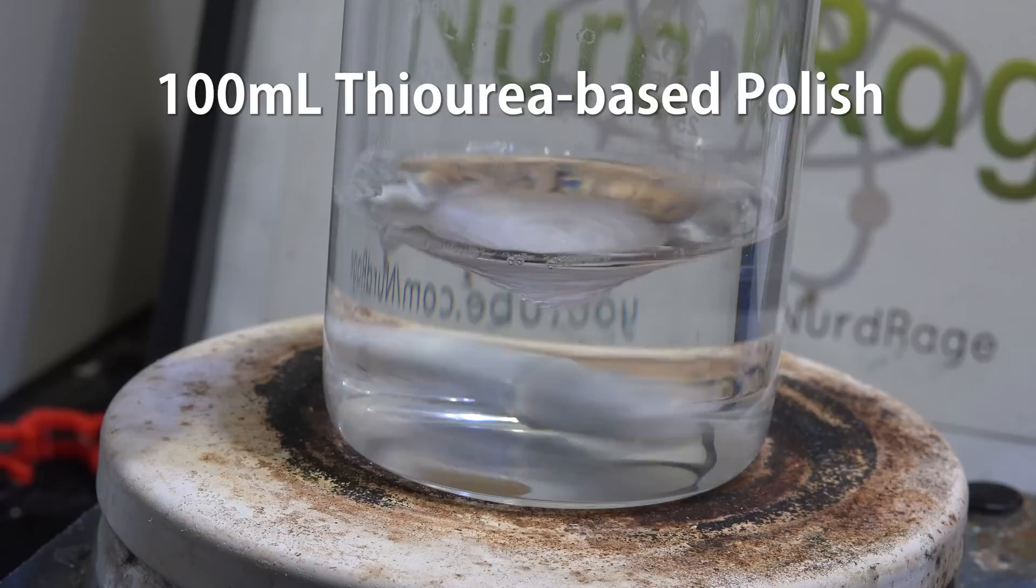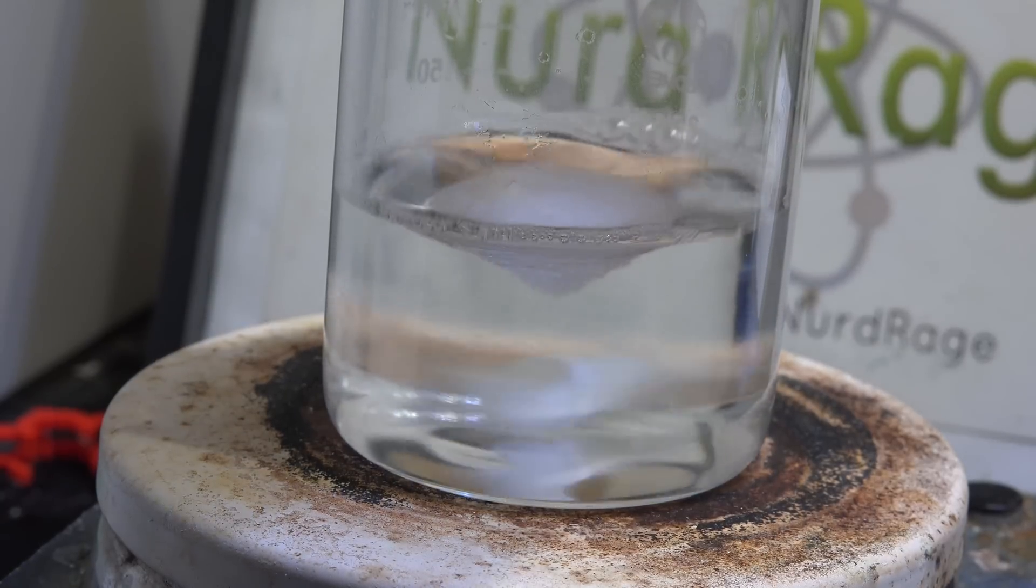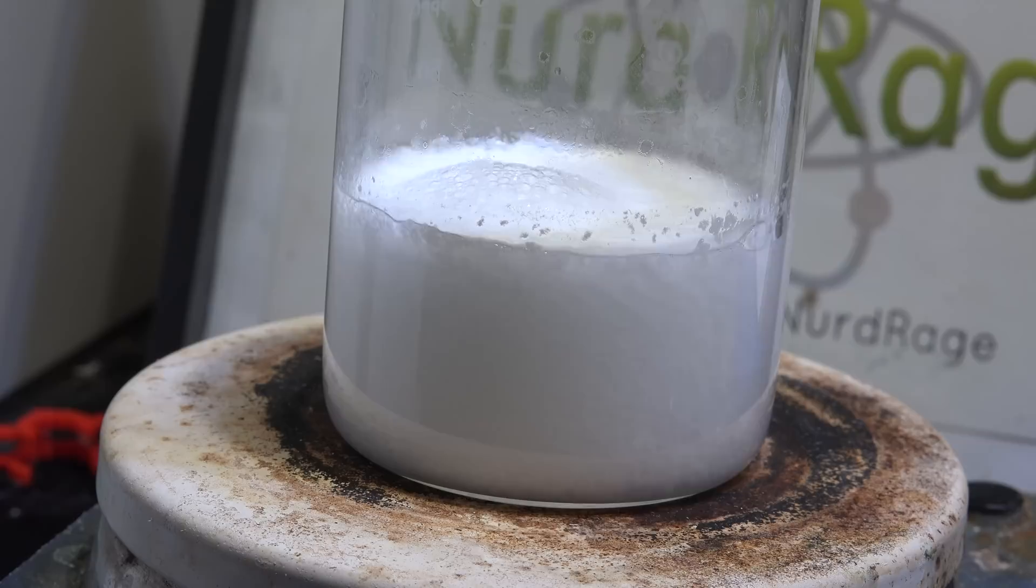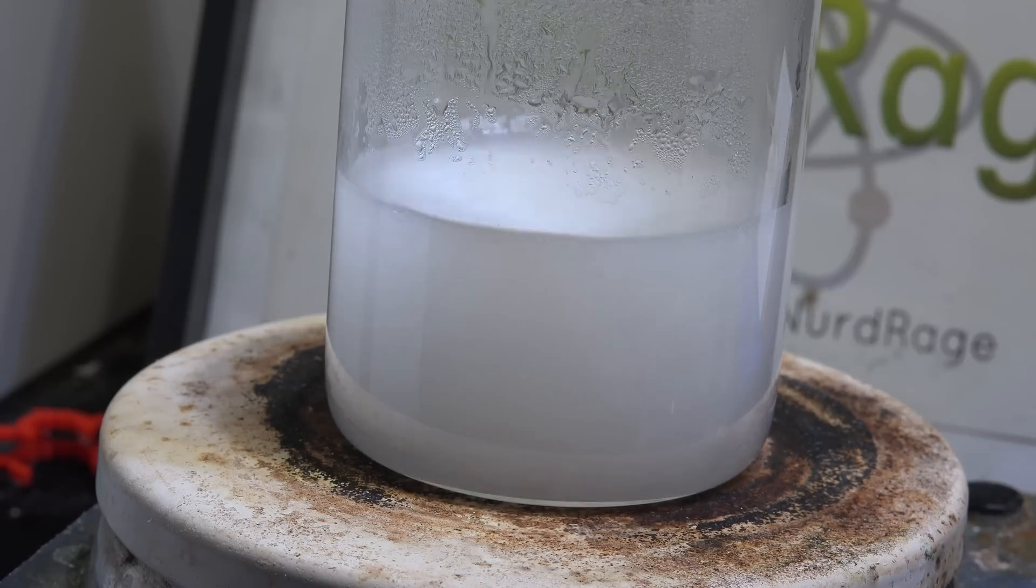Now get about 100 mL of the polishing solution and add in our tin chloride solution. It may precipitate some type of salt. If this happens, heat up the mixture to drive it back into solution.